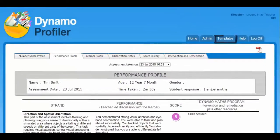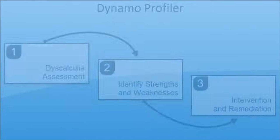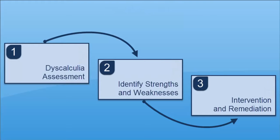Finally, we have the templates tab in the menu to support the SEND code of practice. For example, you can access the learner profile questionnaire, observation notes templates, etc. In summary, the Dynamo Profiler is aimed at helping identify children at high risk of dyscalculia so that purposeful and intentional intervention can be offered. In our next tutorial, we will talk about DynamoMaths, the Intervention Programme and how to add students. Thank you.